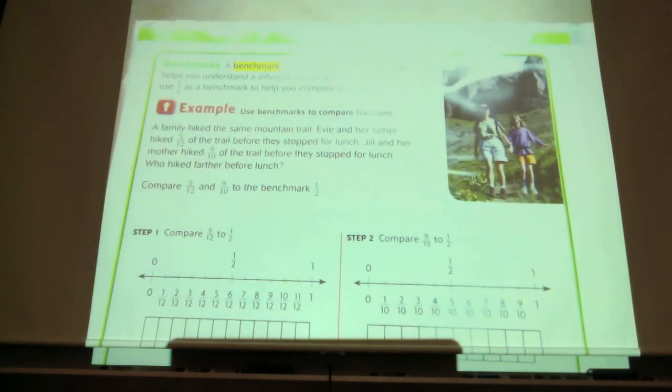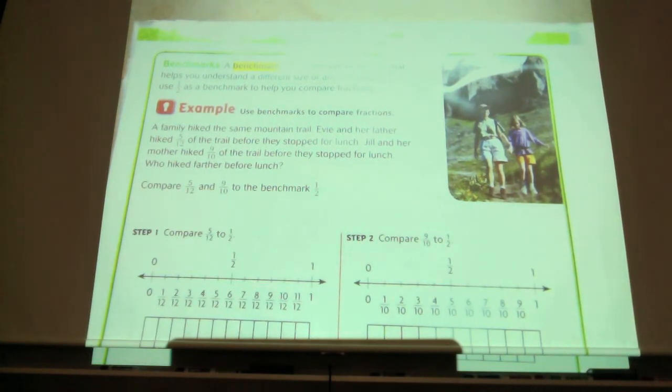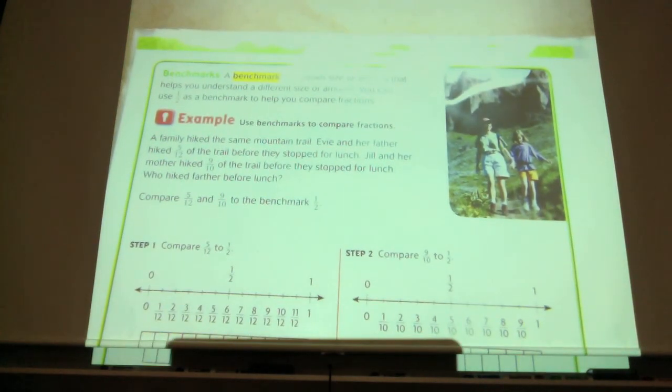Remember back in chapter three, we talked about friendly numbers. Sometimes it was easy to multiply with 25 because it's a friendly number. With fractions, we have something similar, and we call it benchmark. A benchmark is a known size or amount that helps you understand a different size or amount. You can use one-half as a benchmark to help you compare fractions. So we just used the benchmark of a half to help us compare the fraction five-eighths and one-half.